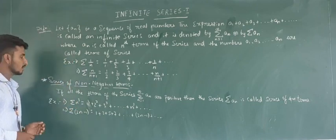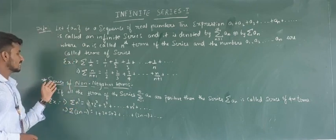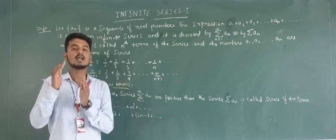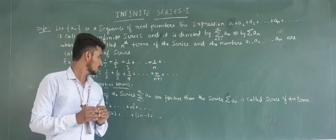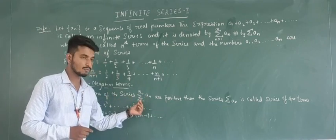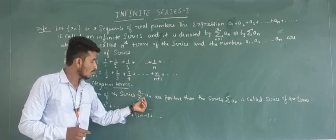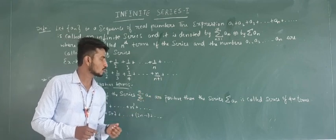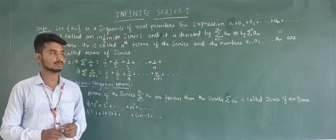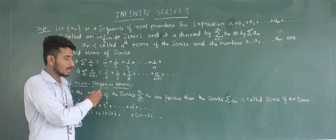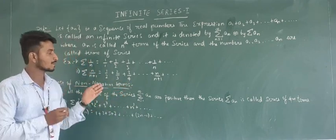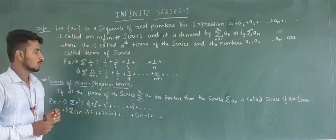Next, we will see the definition of the series of non-negative terms. Non-negative terms means positive terms — the terms of the series must all be positive. If all the terms of the series, summation from n=1 to infinity of an, are positive, then the series is called a series of positive terms.